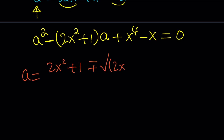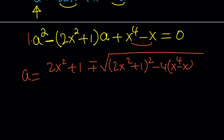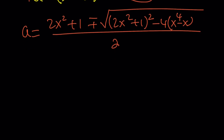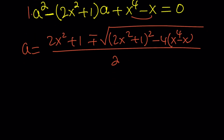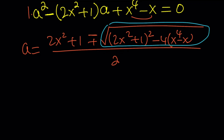So: a equals negative b, which is 2x squared plus 1, plus or minus the square root of b squared — I'm going to write this as (2x squared plus 1) squared first and then expand it — minus 4ac. 'a' here is the coefficient of a squared, which is 1 — by the way, that's a bit confusing notation. So that's going to be 4 times (x to the fourth minus x), all under the square root, divided by 2. This looks complicated but we're going to simplify it. Let's focus on the discriminant.